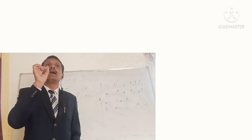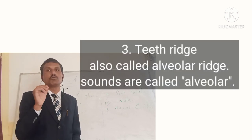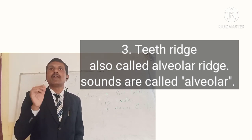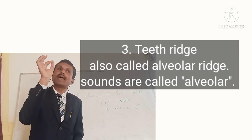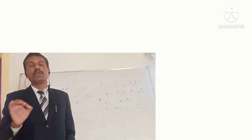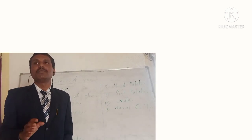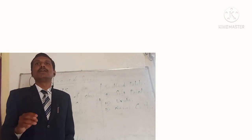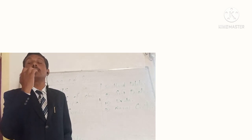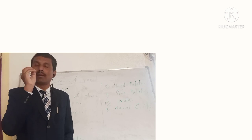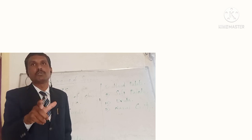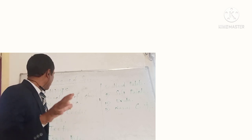After teeth, we have another organ called the teeth ridge, also called the alveolar ridge. Technically, it is called the alveolar ridge. When a sound is produced at the alveolar ridge, the sound is called an alveolar sound. We have plenty of alveolar sounds in English — for instance, 't' and 'd'. The tongue comes in contact with the alveolar ridge to produce these sounds, which are called alveolar sounds.